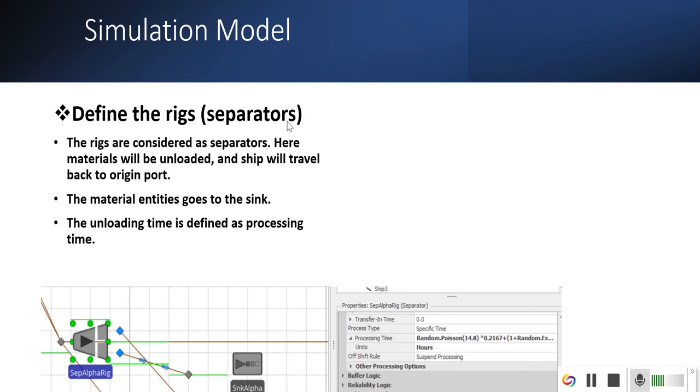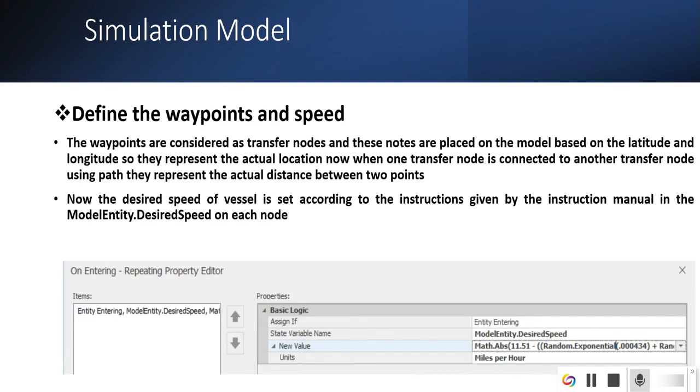The rigs separators are also considered as the rigs. Their processing time is the unloading time. Here materials are unloaded and go to the sink, and the ship goes back to the origin port. The waypoints and the speed is defined as model interior desired speed according to the instructions that are given.